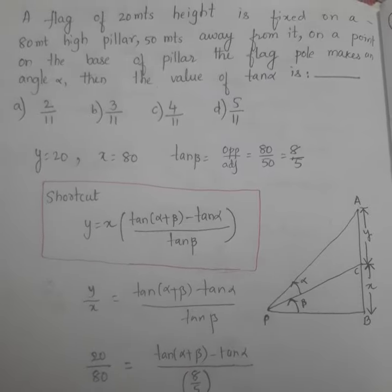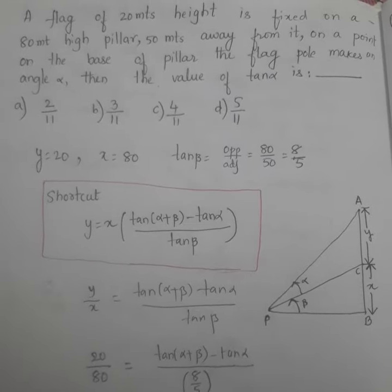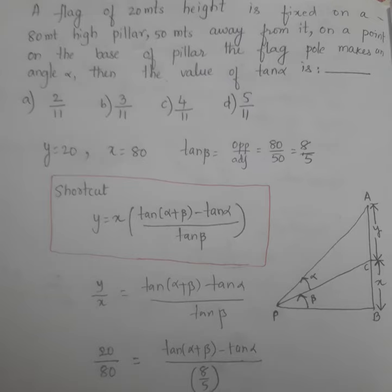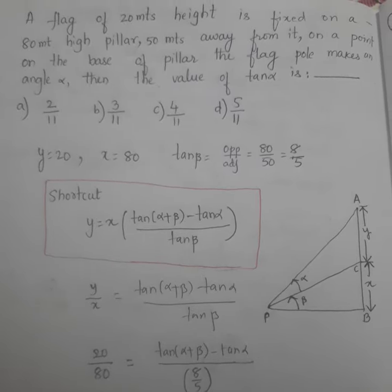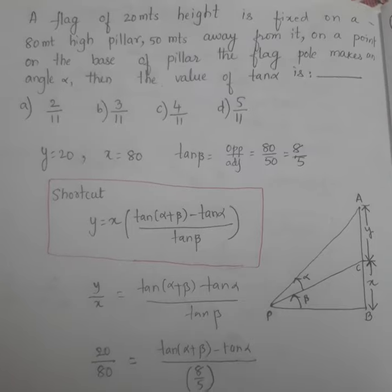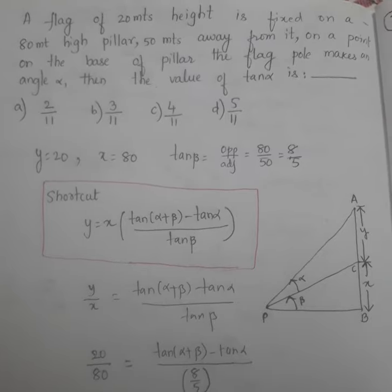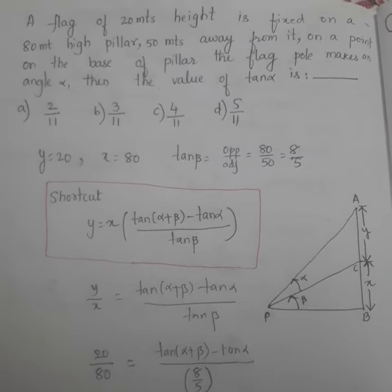Let's see the question. What does the question say? A flag of 20 meters height is fixed on an 80 meter high pillar, 50 meters away from it, on a point on the base of the pillar. The flagpole makes an angle alpha, then the value of tan alpha is...